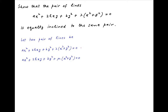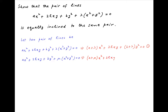The first equation can be rewritten as (a + λ)x² + 2hxy + (b + λ)y² = 0. Let's denote it by equation 1. The second equation can be written as (a + μ)x² + 2hxy + (b + μ)y² = 0. Let's denote this equation by 2.